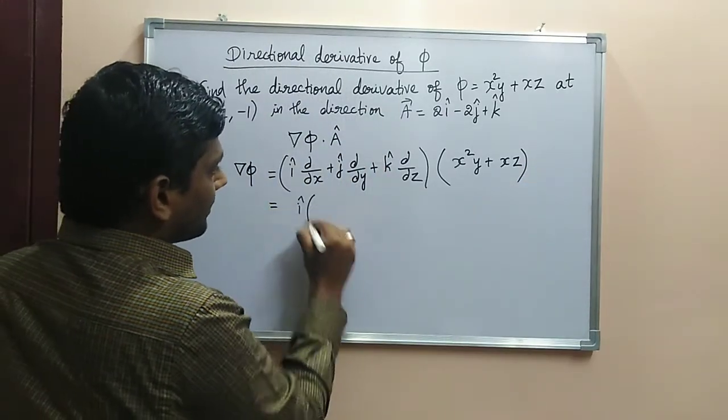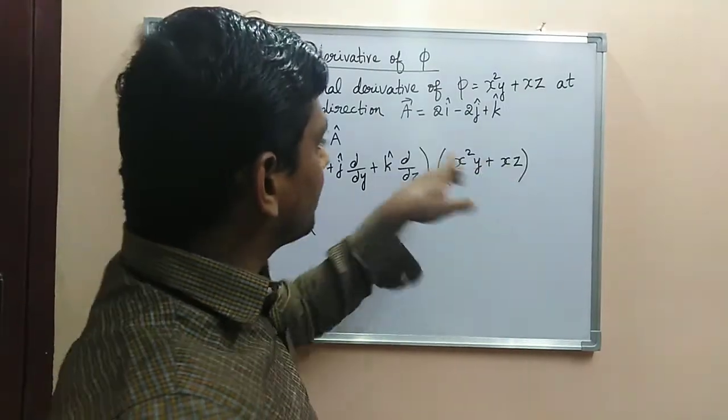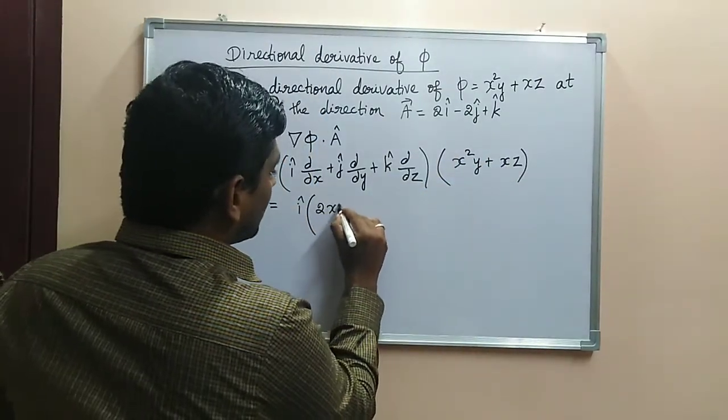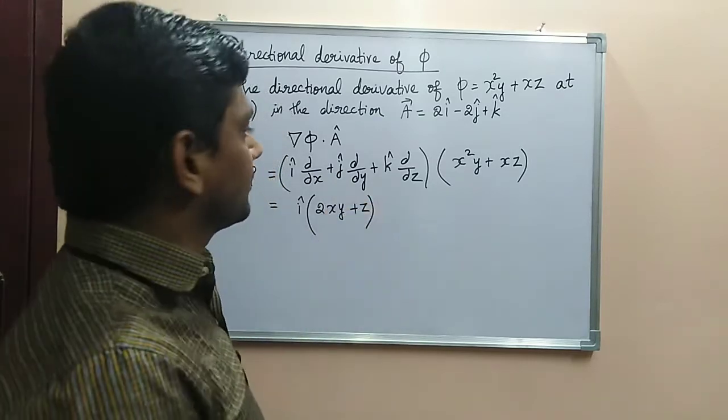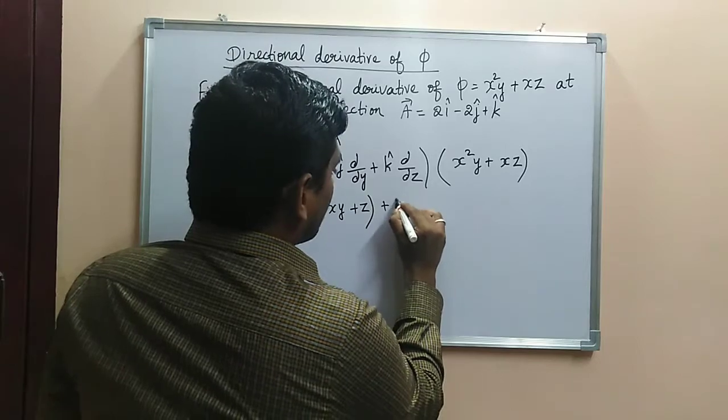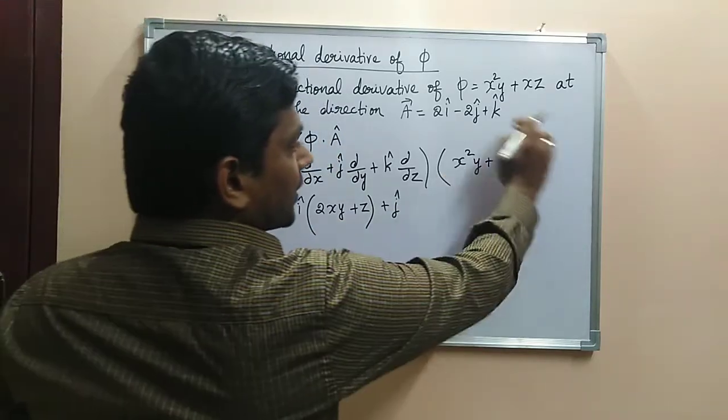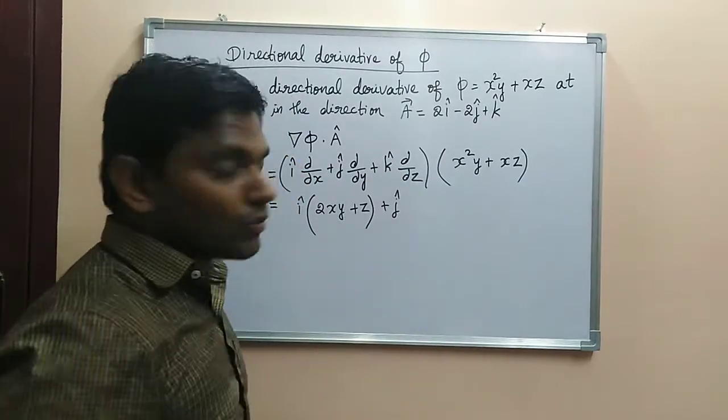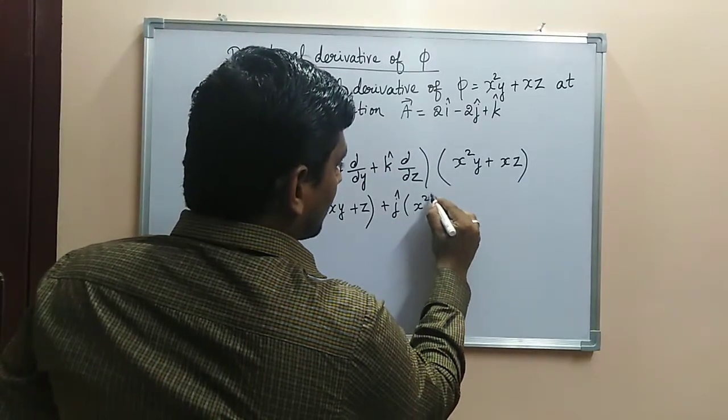So i cap, when you apply this term ∂/∂x to this term, actually you will get 2xy + e^z. And here j cap into ∂/∂y, that is you have to differentiate this term with respect to y, so then you will get x² only.